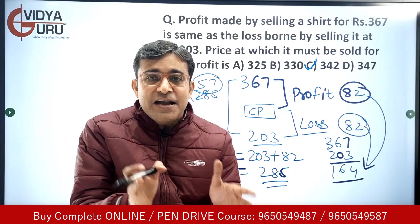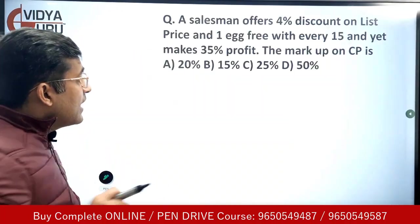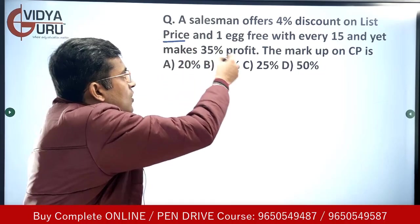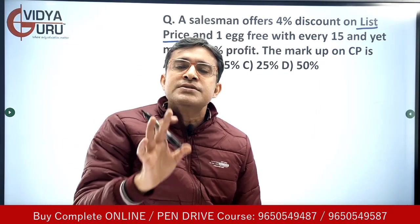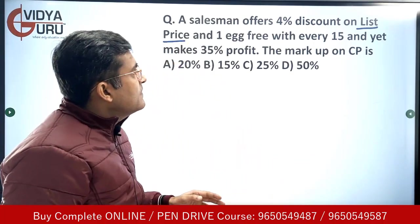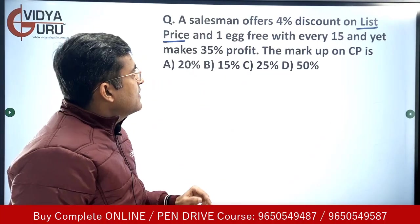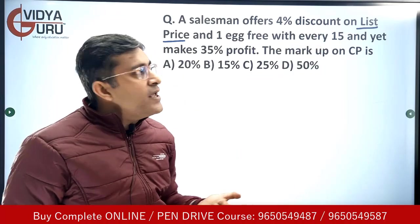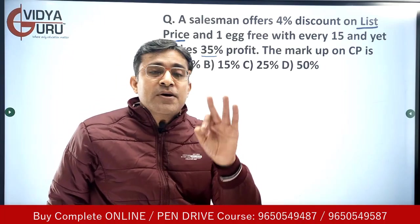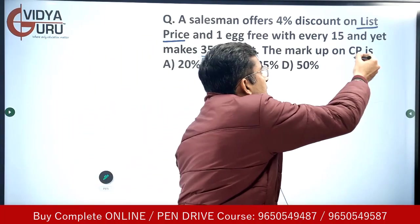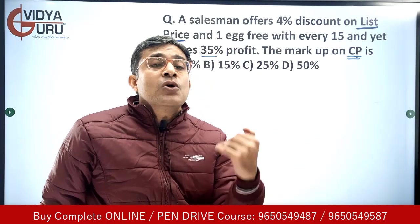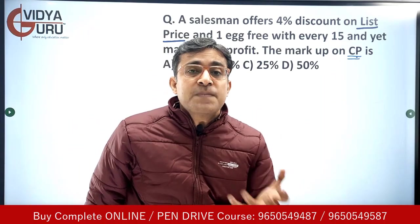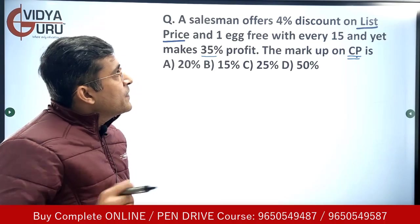Third question: a salesman offers 4 percent discount on list price — list price is also known as mark price. He also gives one egg free with every 15, and still makes 35 percent profit. We have to find the markup on cost price in percentage terms. Let the list price be 100.